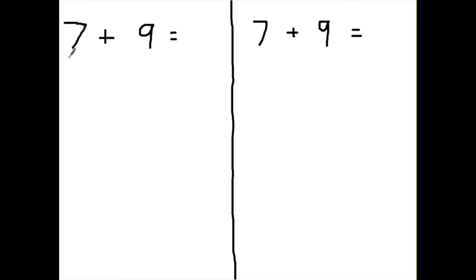We had 7 plus 9, which is not an easy problem to solve, but we're going to make it into a 10 because 10s are easy to use and easy to solve with. So we're going to say 7, and we ask: what makes 10 when I have a 7? 7 plus what? And at this point you should be saying 7 plus 3 makes 10.